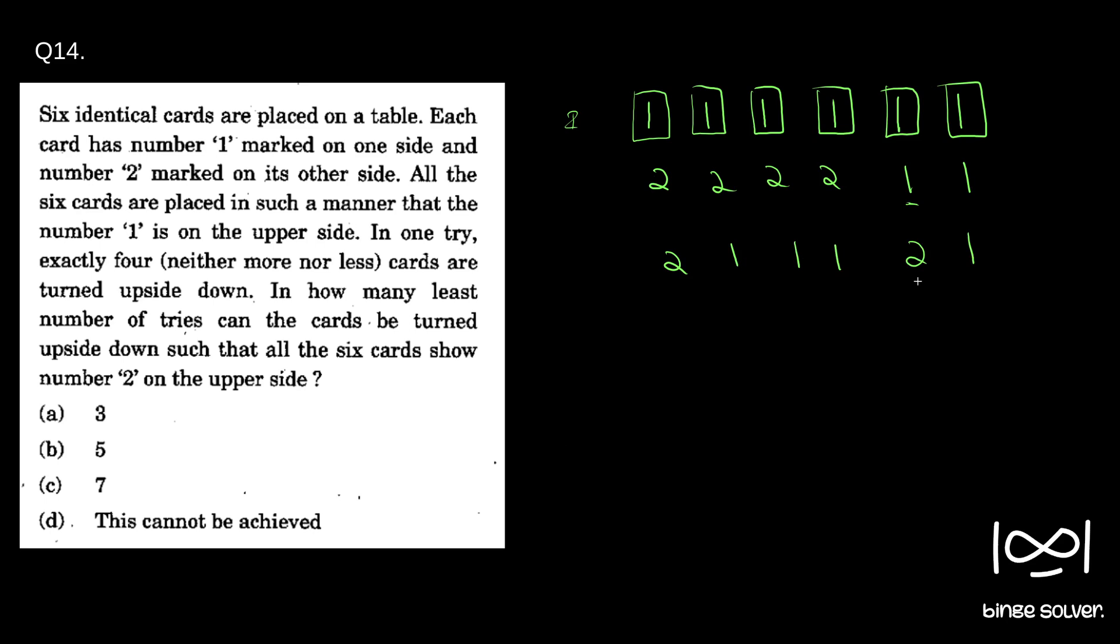So we got this. Now we can select all the ones that is left and turn. So we will get two, two, two, two, two, two. So all the cards are showing twos on its upper side.